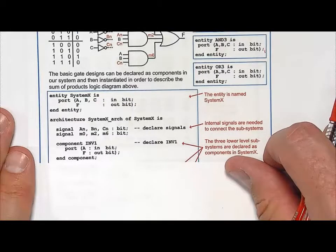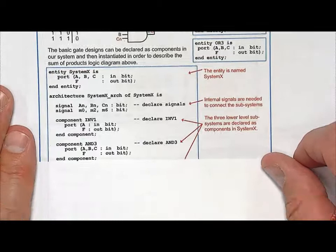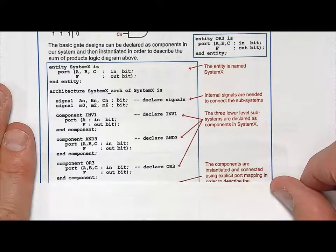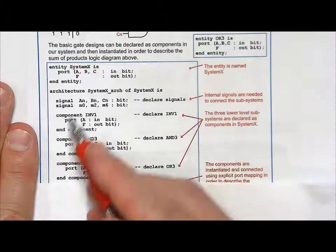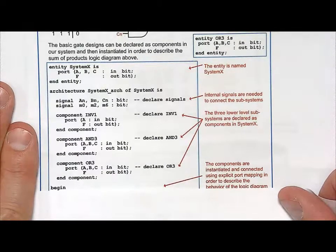Then let's continue. Let's do the AND declaration. So same thing, component AND3, and then you give the ports. And then finally, let's do the OR. So then that's going to be component OR3. So what I've done is I've declared my three components that I'm going to use, and I'm ready to start modeling behavior.